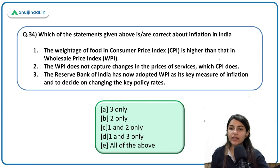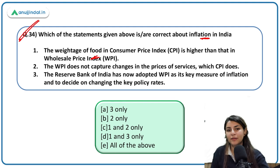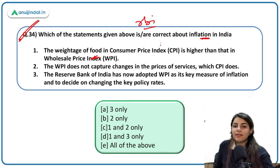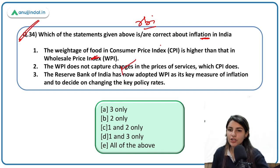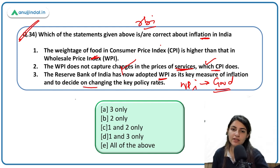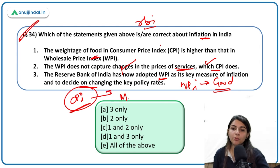About inflation in India: the weightage of food in CPI is higher than in WPI — correct. WPI does not capture changes in prices of services, which CPI does — correct. RBI has now adopted WPI as its key measure of inflation to decide on policy rates — incorrect; RBI still tracks CPI, the Consumer Price Index, to make changes in monetary policy. The first and second statements are correct; the third is incorrect.